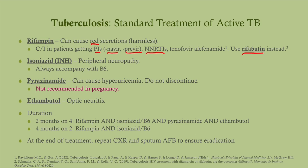Isoniazid can cause peripheral neuropathy because it reduces your level of B6. For that reason we always accompany isoniazid with B6, and we also have to monitor liver function tests because isoniazid is mildly hepatotoxic. Pyrazinamide can cause hyperuricemia — if they do develop gout, do not discontinue it, just treat the gout. It is also not recommended in pregnancy. Ethambutol — think E — ethambutol causes optic neuritis.